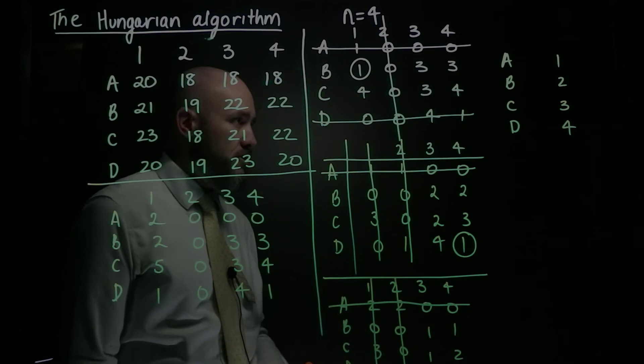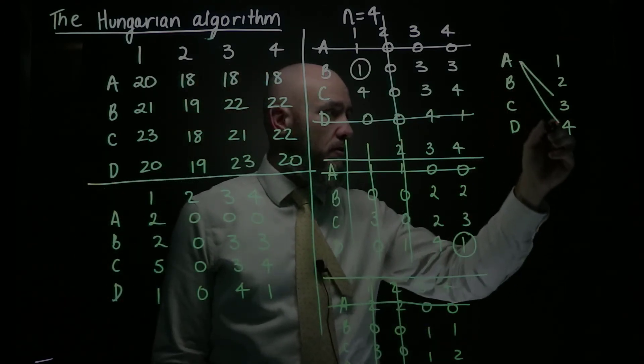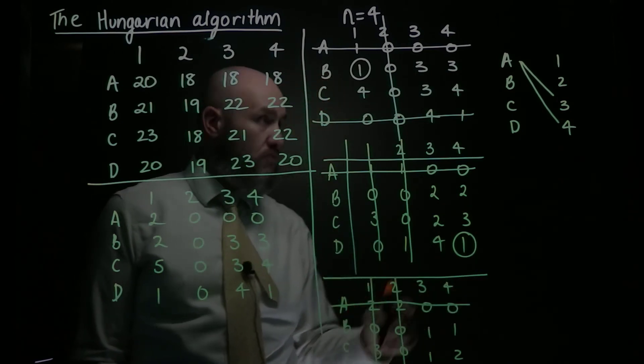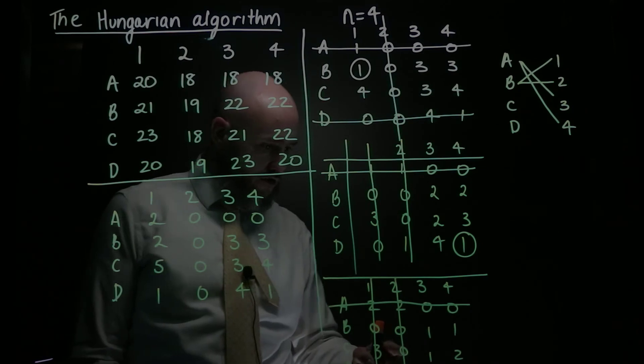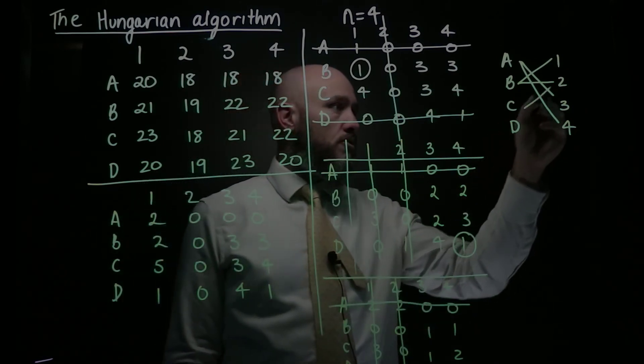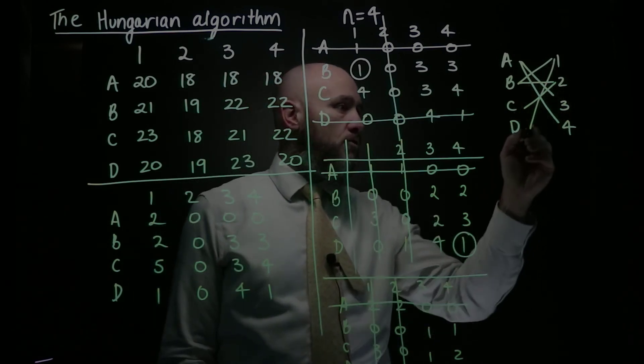And I do my connections. So A has got 0s against 3 and 4, so I do that, and B has got 0s against 1 and 2, so I do that, and C has got 0s just against 2, so I do that, and D has got 0s against 1 and 4, so I do that.